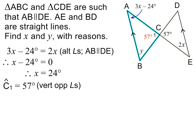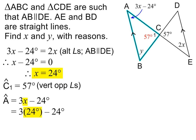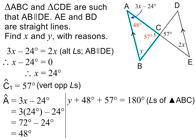We are now ready to use triangle ABC, because y is the only unknown interior angle. We are given that angle A is equal to 3x minus 24 degrees, and we have just calculated that x is 24 degrees. So to find angle A, we substitute 24 degrees in place of x. Angle A is therefore equal to 48 degrees. This means we can write the following equation, because the angles of a triangle always add up to 180 degrees. We begin by adding 48 degrees and 57 degrees on the left. We then subtract 105 degrees from both sides. y is therefore equal to 75 degrees. Please pause to check my working.